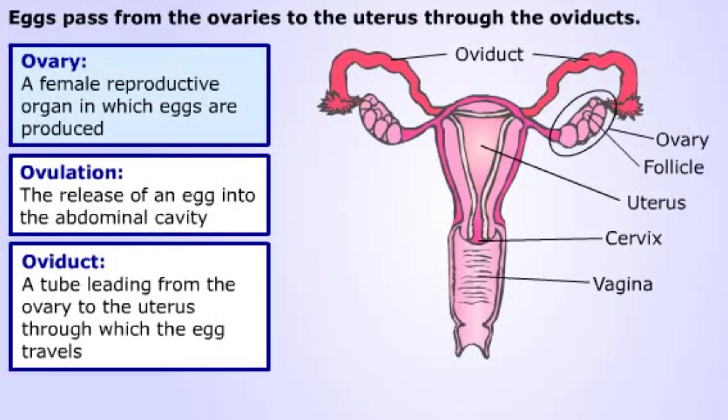Two ovaries are attached in the abdominal cavity by connective tissue. Each ovary contains many follicles. By the process of ovulation, an egg is released into the abdominal cavity near the opening of a paired tube called the oviduct.